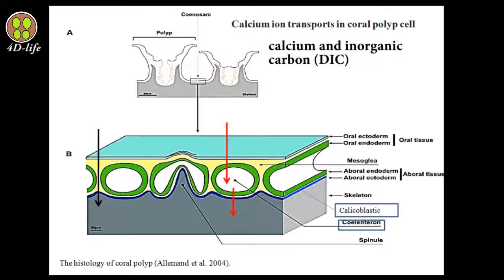For calcification, corals need to obtain calcium and inorganic carbon from seawater. Before discussing calcium ion transport, it is important to explain more details about the coral epithelium. Two parts of the coral epithelium have the most important role in ion transport: the calicoblastic layer and the coelenteron.